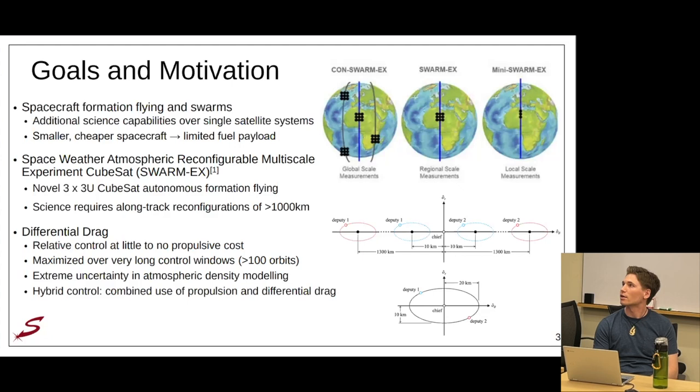Spacecraft swarms and formation flight provide additional science capabilities over single satellite missions. They're comprised of smaller, cheaper, modular spacecraft that can have enhanced science capabilities such as highly variable focal length or robustness through modularity. One such mission, which is a primary motivator of this work, is the Swarm X mission, which would be a novel demonstration of three 3U CubeSats in autonomous formation flight. The science mission of Swarm X requires a long track reconfiguration, or change in separation, of over a thousand kilometers. And this reconfiguration cannot be accomplished using the CubeSat fuel payload alone due to fuel payload limitations.